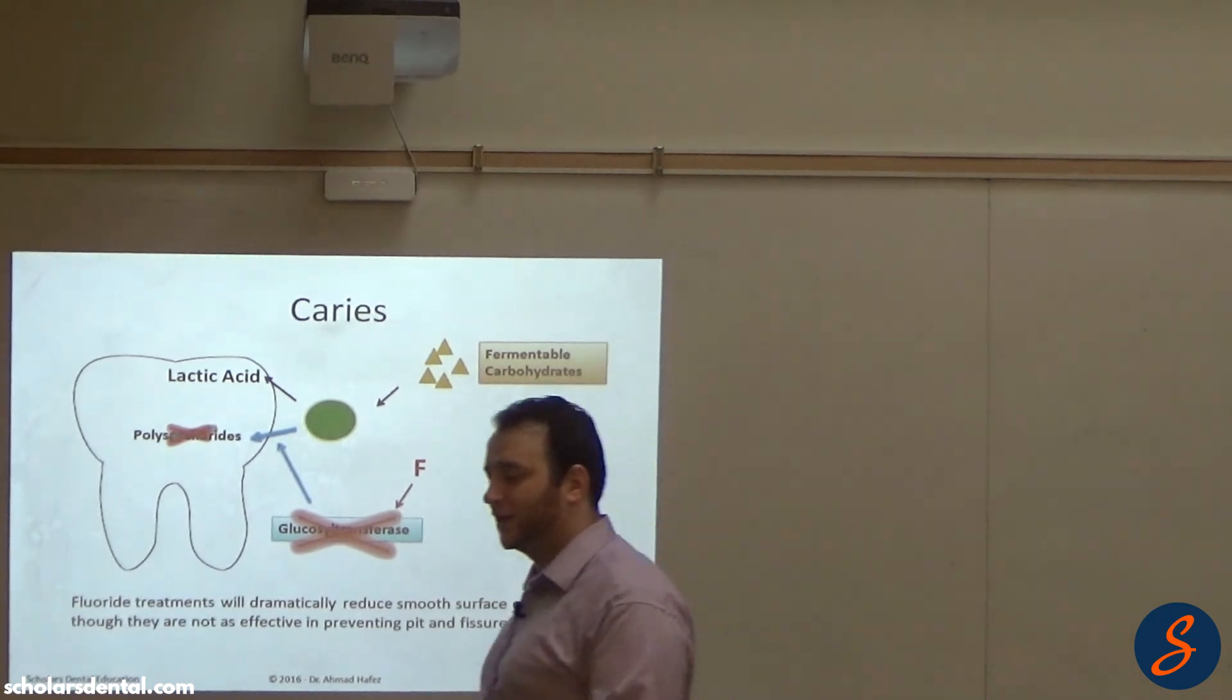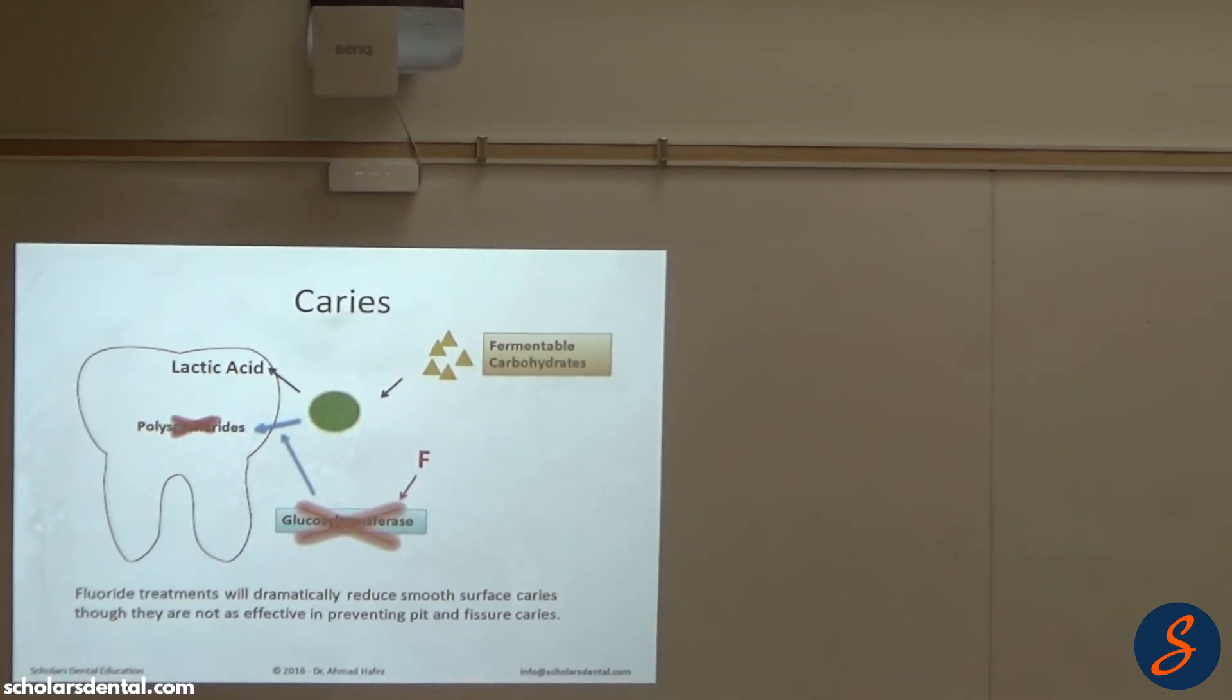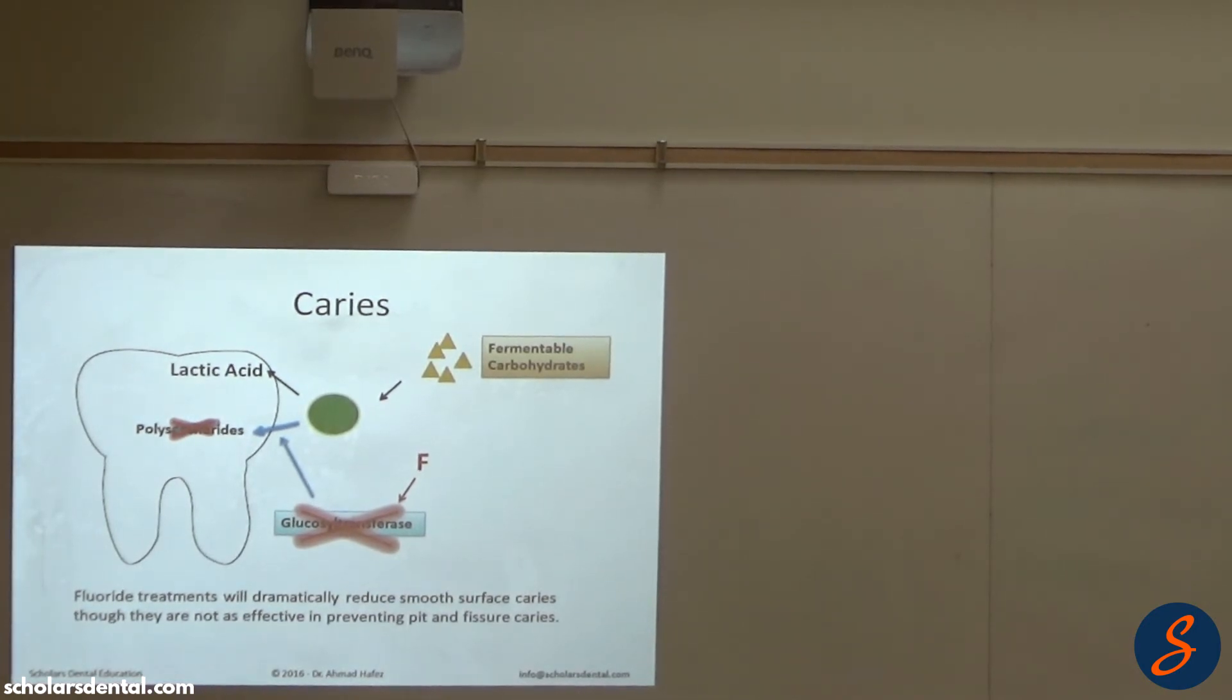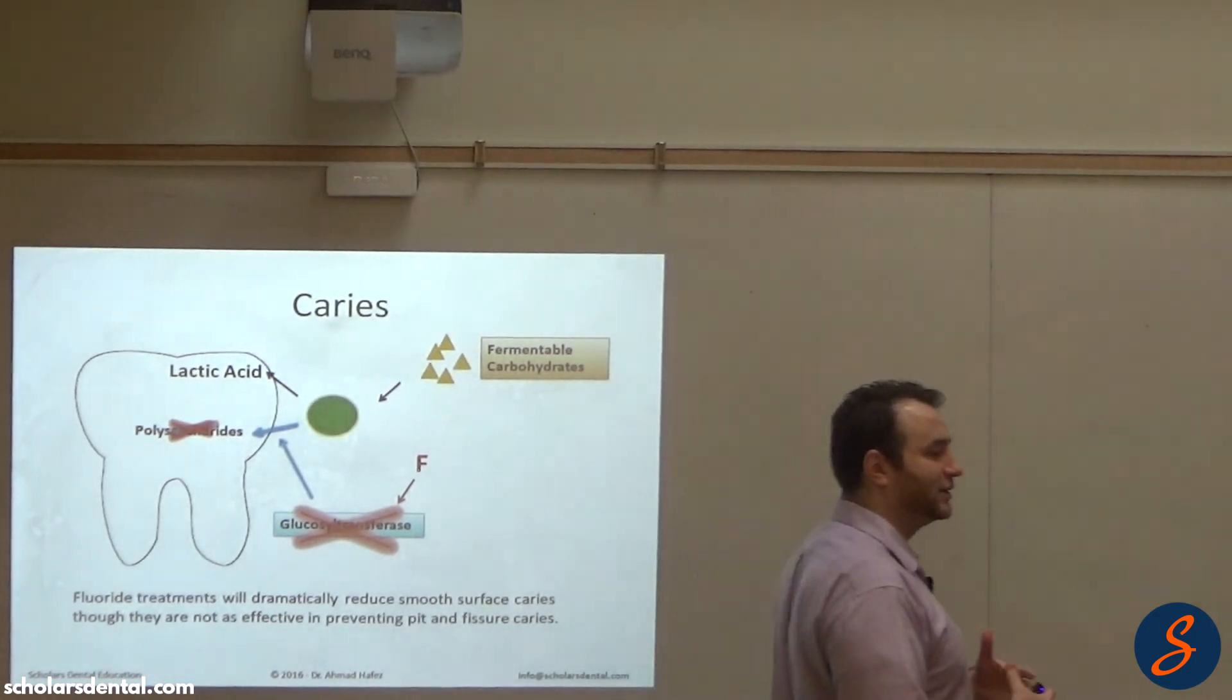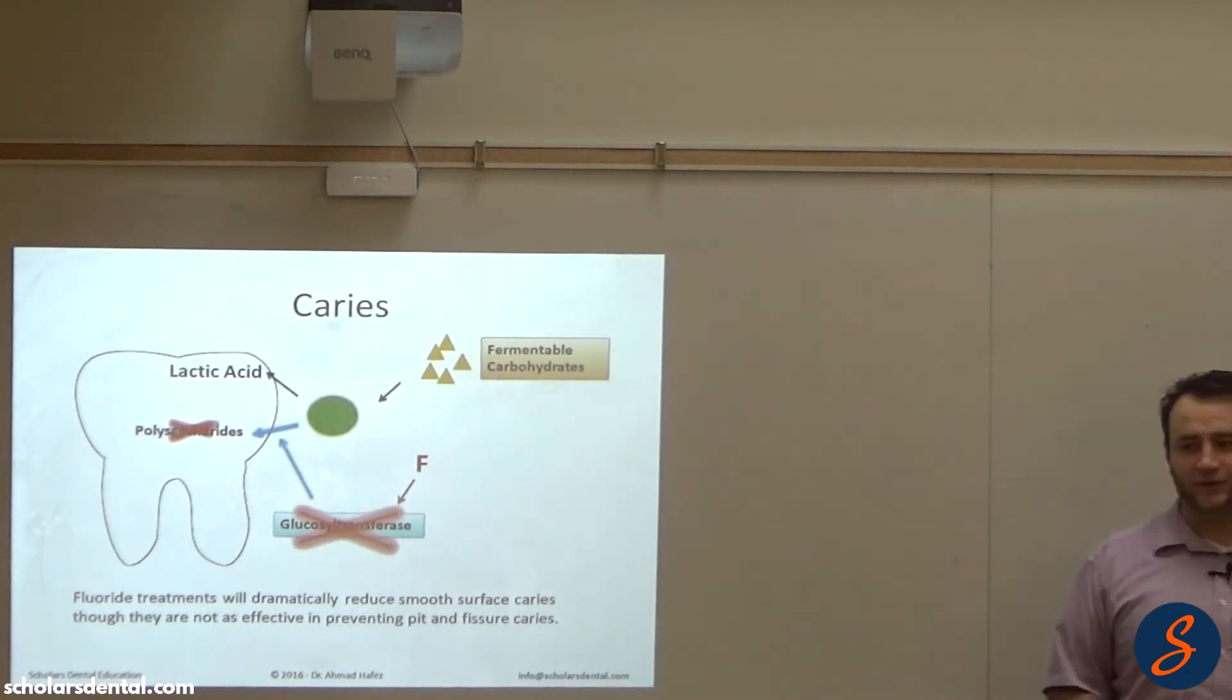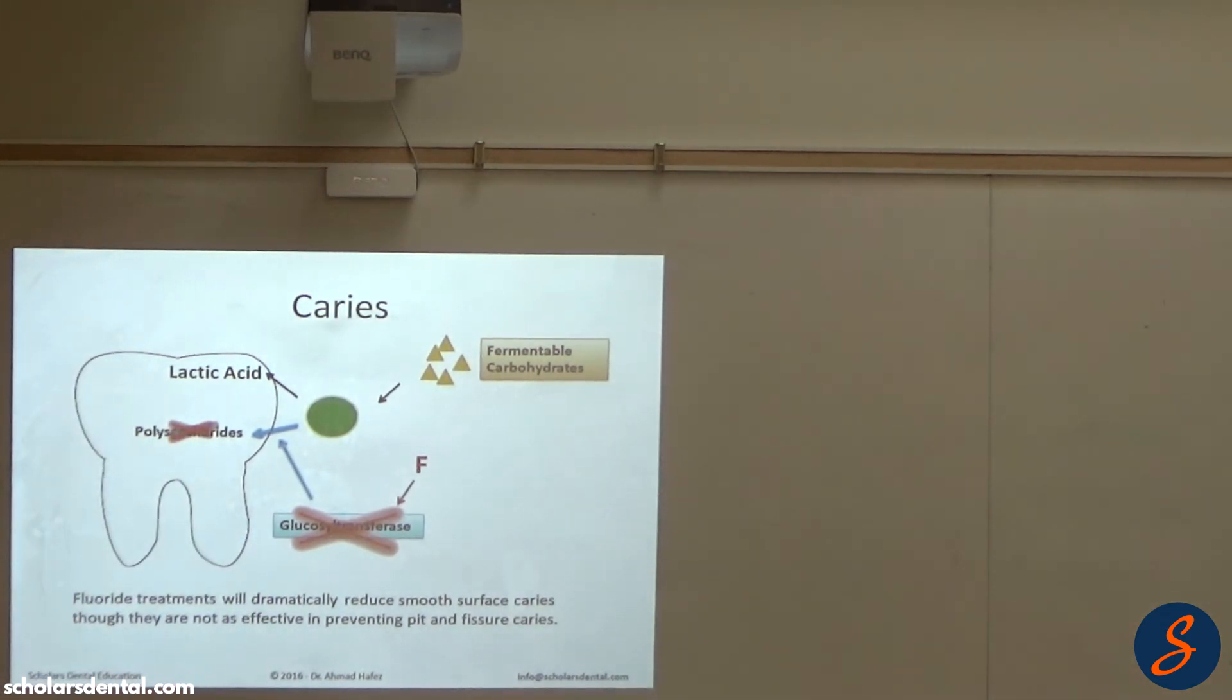This is why we say fluoride is better at preventing smooth surface caries. And we use sealants to prevent pit and fissure caries. We don't say fluoride is super awesome at preventing pit and fissure caries. We say it's really awesome at smooth surface caries. That's its highest preventive.